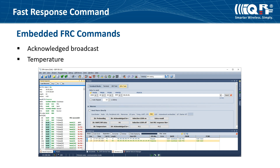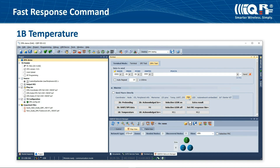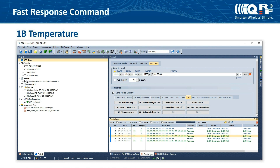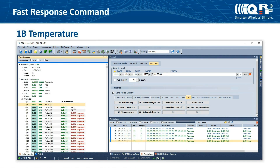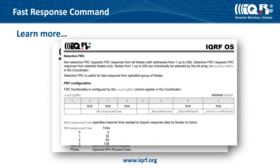Let's show it in IQRF IDE. We use the network with two nodes from the previous video tutorial. In macros, find the FRC tab and here find the macro 1 byte temperature. It contains a command for getting the 1 byte temperature from the whole network. Click on it and then send the command. In the terminal log window, double click the response packet and find details about the temperature in the Packet Inspector window. Find more details and other embedded FRC commands or details about selective FRC in the IQRF DPA Framework Technical Guide and IQRF OS User Guide. You can create your own fast response commands using custom DPA handlers.